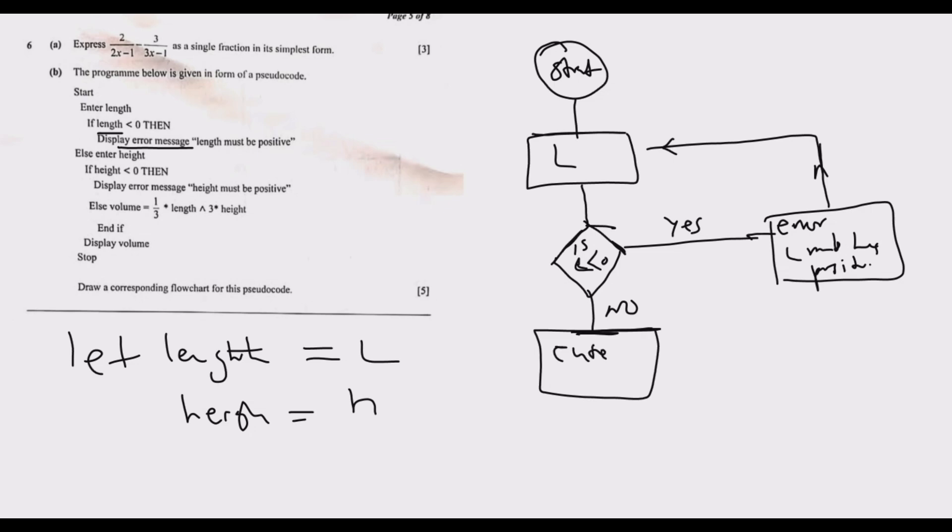Then we need to check: is H less than zero? If the answer is yes, then we also need again to display this error message. The error message is 'H must be positive.'